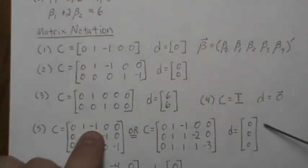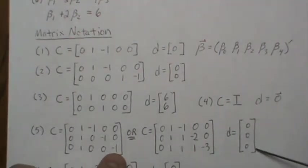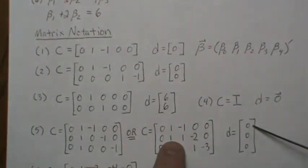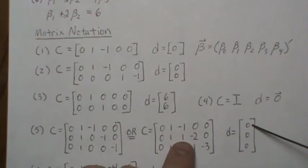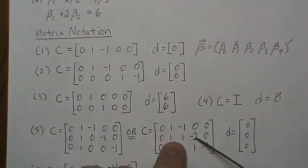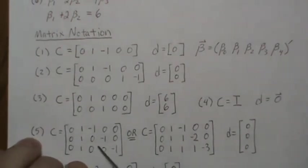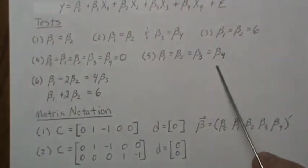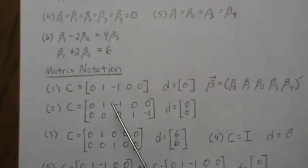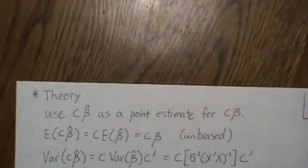One version of the C matrix for Test 5 says beta_1 = beta_2, beta_1 = beta_3, and beta_1 = beta_4. The other formulation says beta_1 = beta_2, beta_1 + beta_2 = -beta_3, and so on — both C matrices are equivalent for testing this hypothesis. For Test 6, we simply set up the two stated constraints and that's it. Now let's jump into the theory of why this test works.